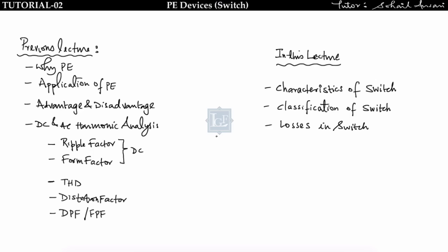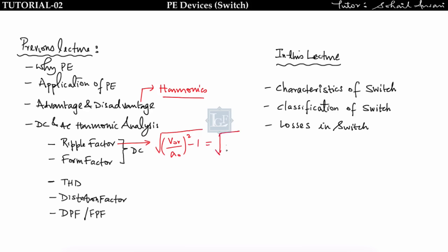In the previous lecture we covered why we study power electronics, its applications, advantages and disadvantages. One major disadvantage is harmonics. We derived DC harmonic parameters like ripple factor, given by the square root of (V_rms / V_dc)² minus one, which can also be written as the square root of form factor squared minus one, where form factor equals V_rms divided by the constant DC output voltage.